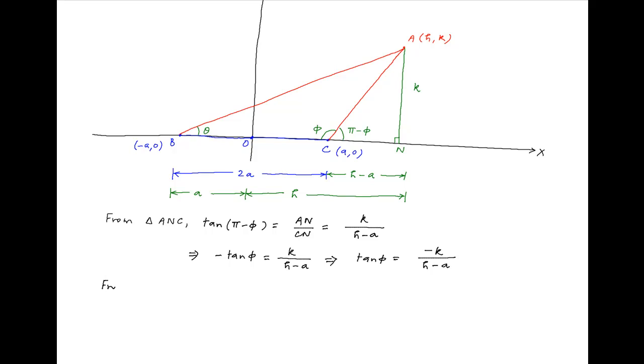Similarly, from right angle triangle ANB, tan θ is equal to AN divided by BN which is equal to K divided by H plus A.